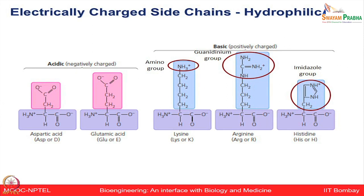Moving to electrically charged or hydrophilic amino acids: aspartic acid and glutamic acid are acidic with negatively charged groups. Lysine, arginine, and histidine carry positive charges and are basic amino acids. Lysine is characterized by an amino group, arginine by a guanidinium group, and histidine by an imidazole group.